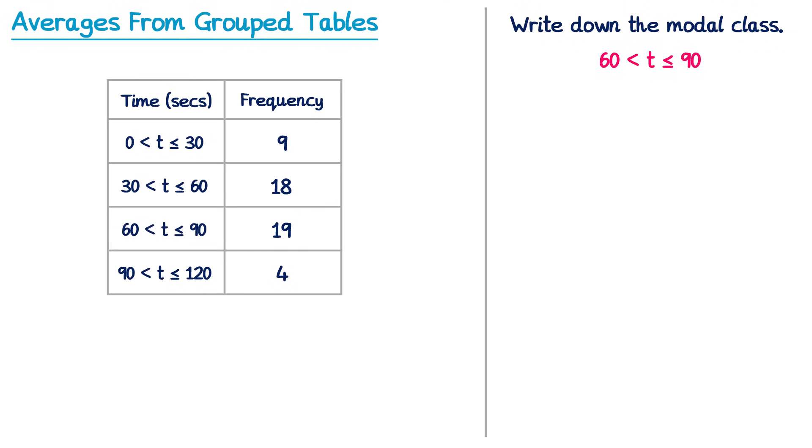Next we're going to have a look at the median. So we need to write down the interval that contains the median time. To do this we add up the frequencies. If you add all of those frequencies for this table you get 50. We add 1 to this, so 50 plus 1 is 51, and then divide it by 2. 51 divided by 2 is 25.5. This means we're looking for the 25.5th value.